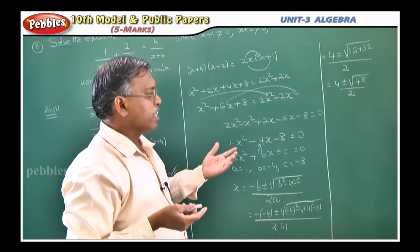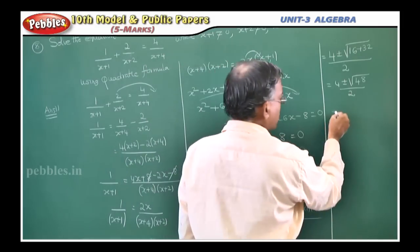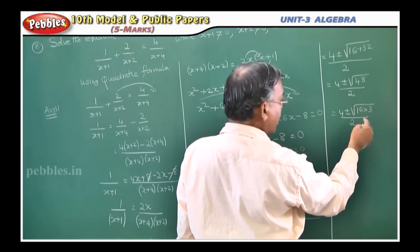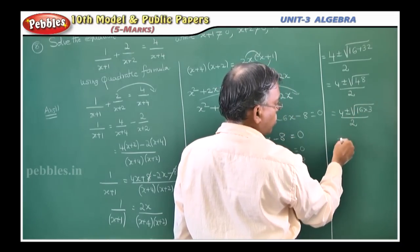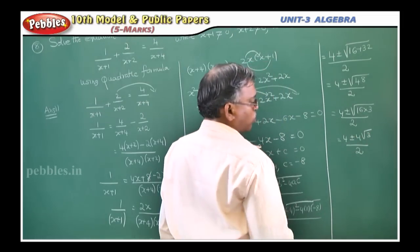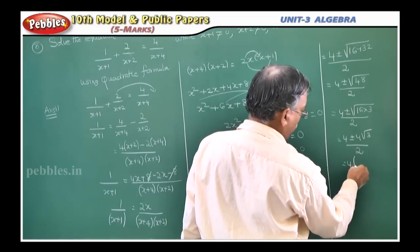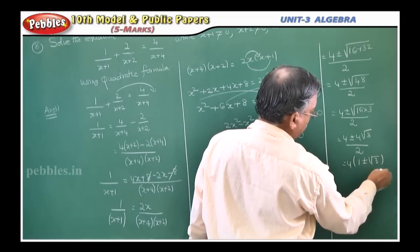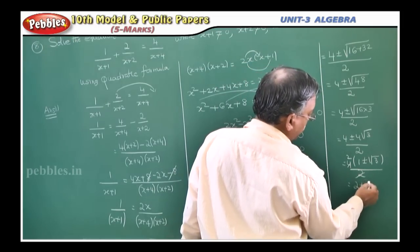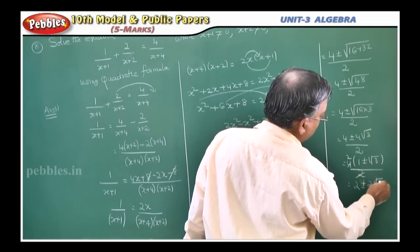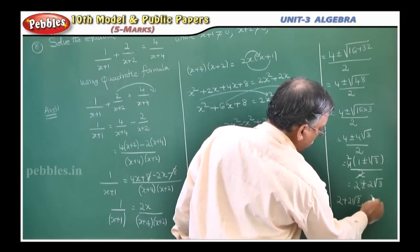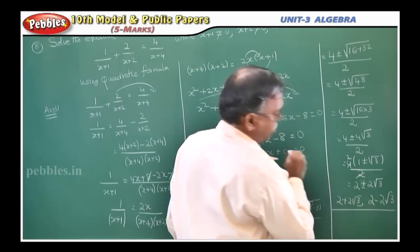Now simplify √48: write it as √(16 × 3). So x = [4 ± √(16·3)] / 2 = [4 ± 4√3] / 2. Take 4 as a common factor: 4(1 ± √3) / 2. The 2 cancels, giving 2(1 ± √3) = 2 ± 2√3. So the two roots are x = 2 + 2√3 and x = 2 − 2√3.